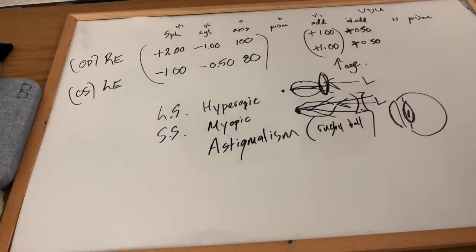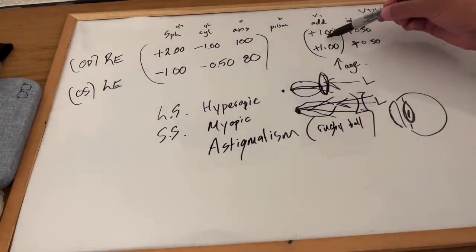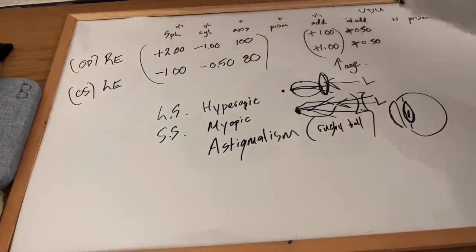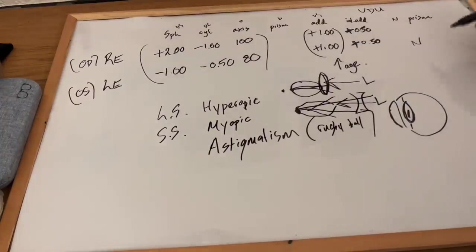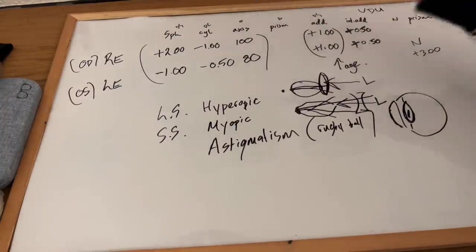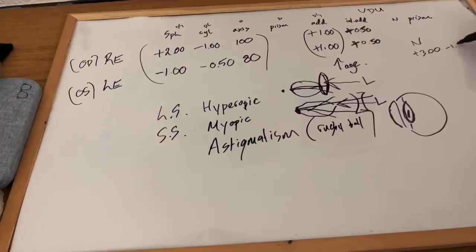Now if you wanted to work out your reading prescription, just your reading prescription, take the plus one add, add it to the two. So your reading in this case, for near, talking about your reading not intermediate, one, two would be plus three. Keep the cylinder there, axis remains the same. So that is how you calculate your near.